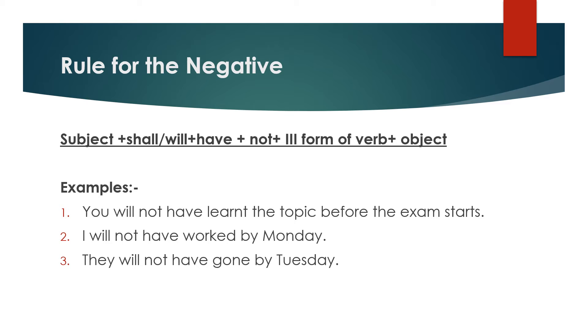Now we will discuss the rules for negative sentences. The rule for negative sentences is: subject plus shall/will plus have plus not plus third form of verb plus object.